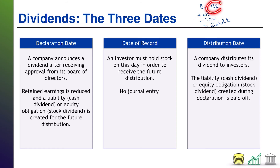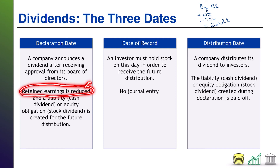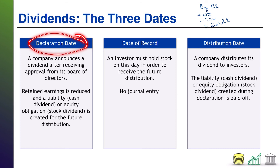So dividends come from your retained earnings. On the day you create that obligation — which is going to be a credit, whether it's the liability or the equity — you are also going to debit your retained earnings to reduce the retained earnings by the amount of the dividend. That's all on the declaration date.